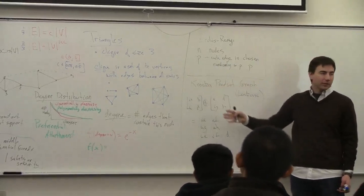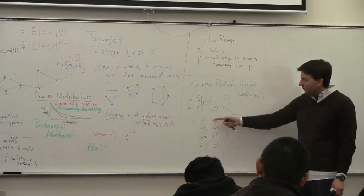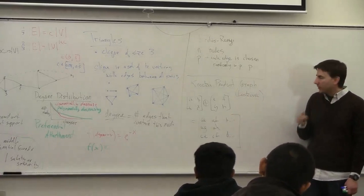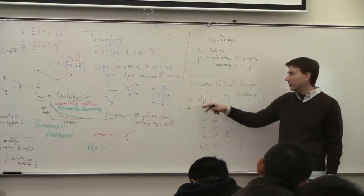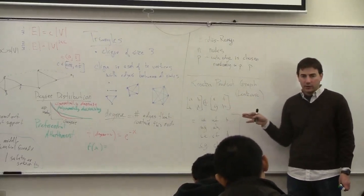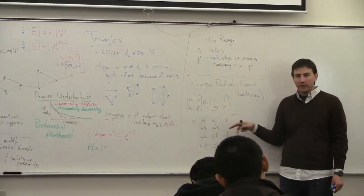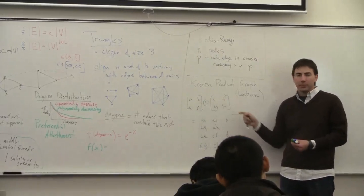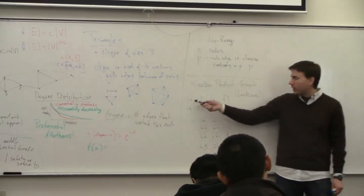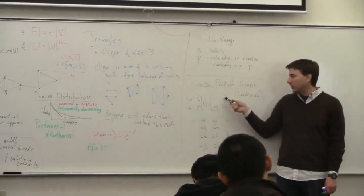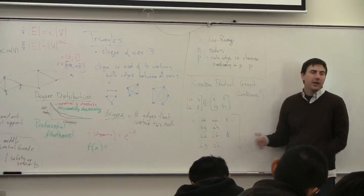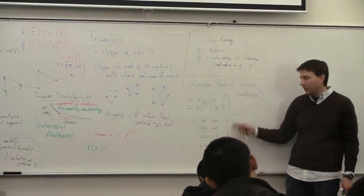How does this relate to graphs? You think of the graph as a matrix where entries are 0 or 1 depending on whether an edge is there. If you generate a graph by doing a Kronecker product of smaller graphs, taking zero-one entries gives too much uniformity. Instead, you put a probability of an edge in each of the four locations, multiply the probabilities, and then flip a coin based on those probabilities to generate edges.